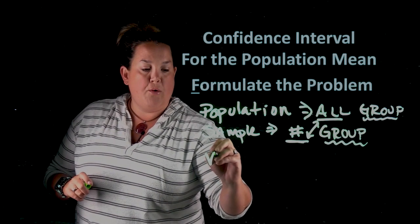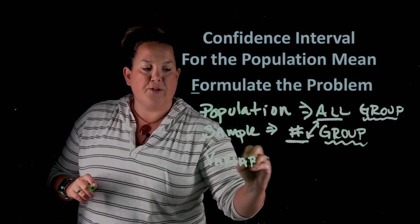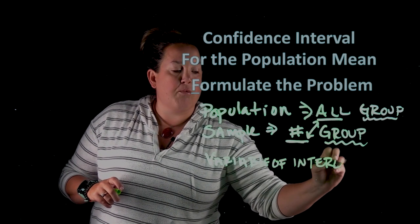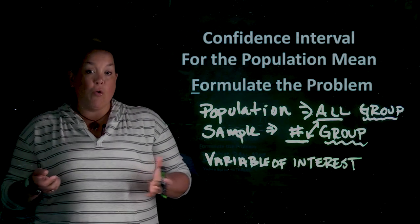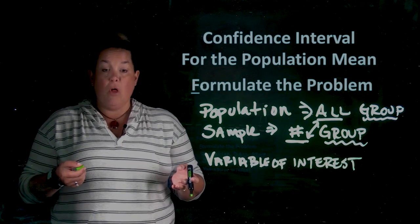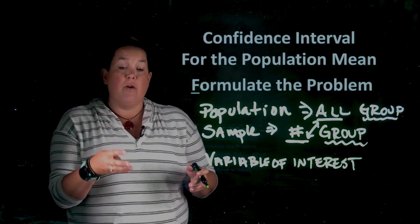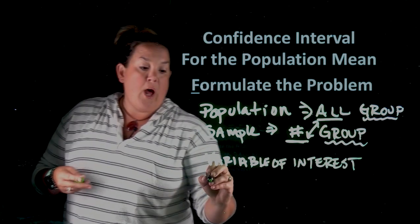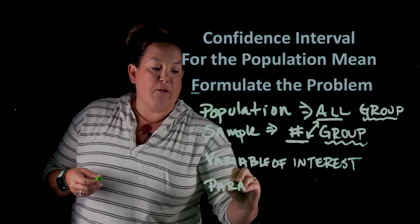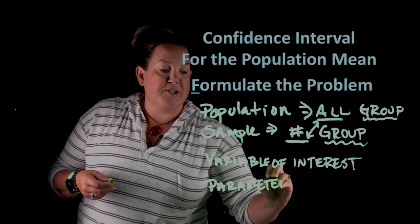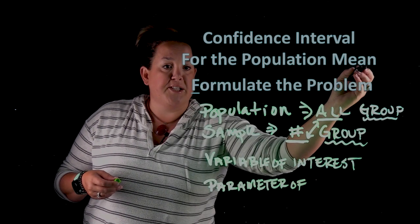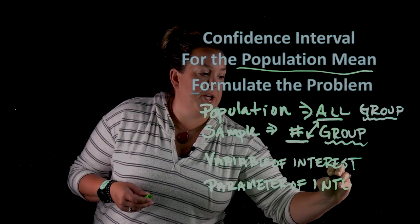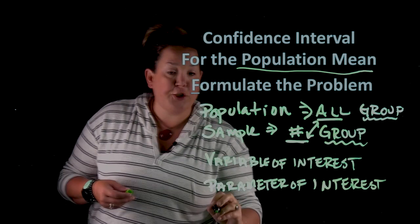The next thing you would do is state your variable of interest — what are you measuring, what are you interested in? When you're talking about means, you are going to be stating some quantitative variable, and it's important to remember to state what units are being used to measure that variable. Then at the end, you're going to state your parameter of interest, and for these problems, because it's the population mean, your parameter of interest is going to have the notation mu.